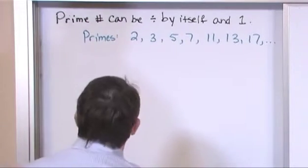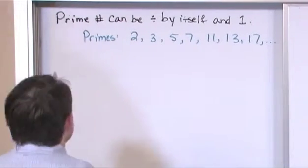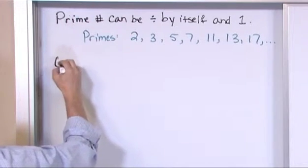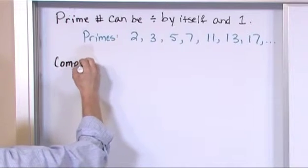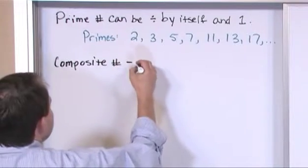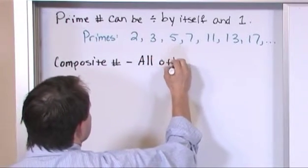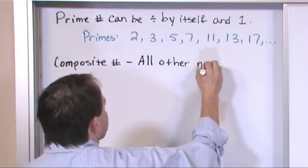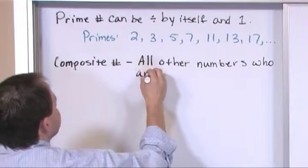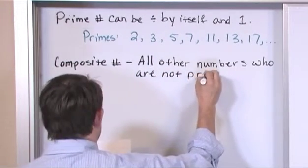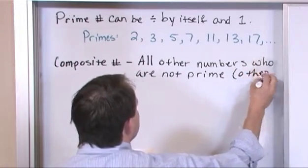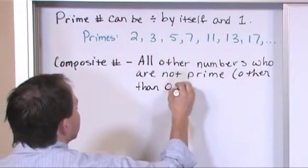Let me give you another little definition and that's just because sometimes on a test you might be asked this. We have prime numbers. Now, a composite number. Sometimes you might see that in a book. What is a composite number? It is simply all other numbers who are not prime other than zero and one.